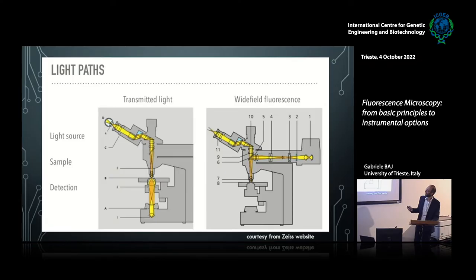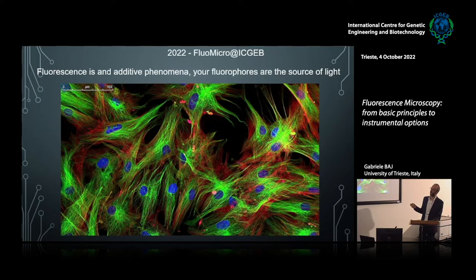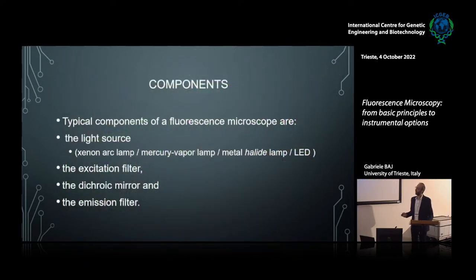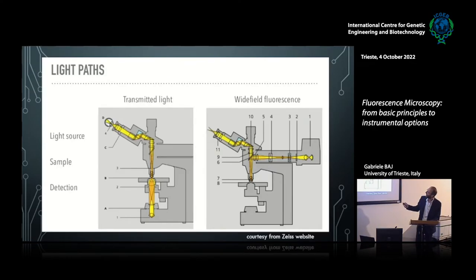There is one particular element in the middle that changes the behavior of the microscope from a regular bright-field microscope to a fluorescent microscope. Fluorescence is an additive phenomenon because you keep collecting photons from your sample at different wavelengths and can produce different multicolor images. The typical components of an epifluorescence microscope are a particular light source, an excitation filter, a dichroic mirror, and an emission filter.